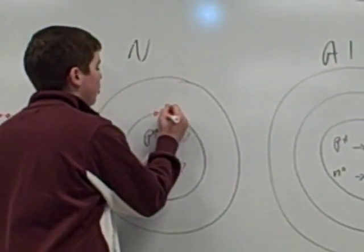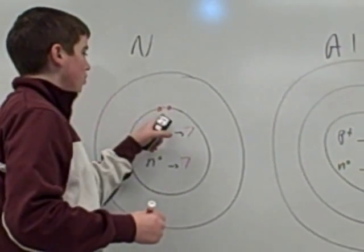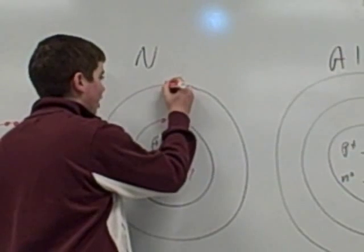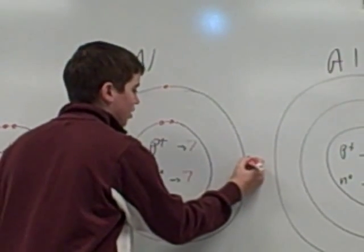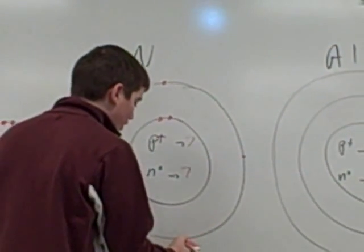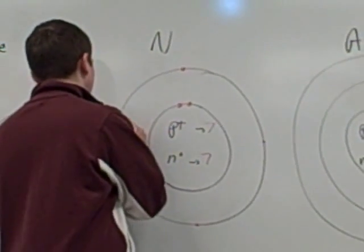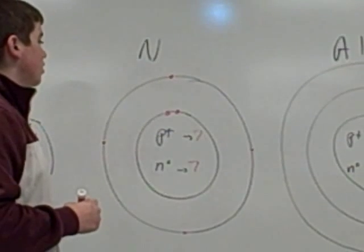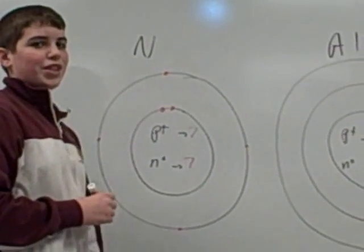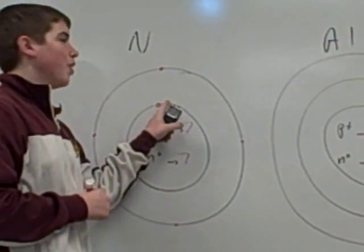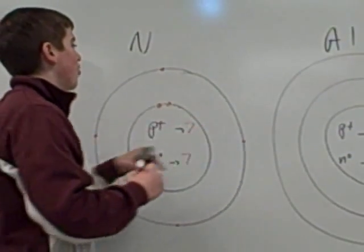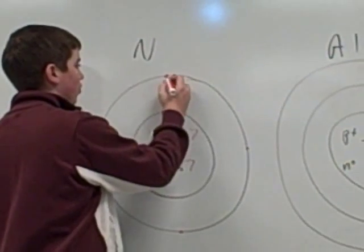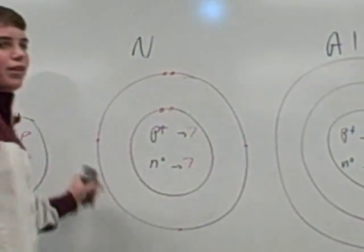You can only have two on the first layer, so put two there. That means I have to go to the next layer. You always go 1, 2, 3, 6, 9. If you have to go again, you pair it next to each other. We have to go again. We have one, two, three, four, five, six, seven.